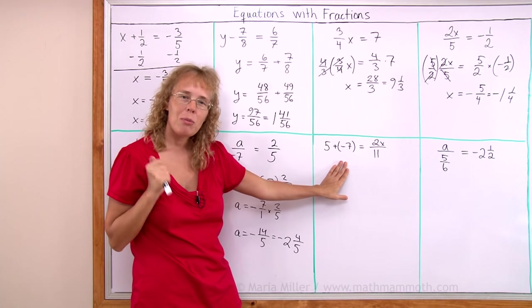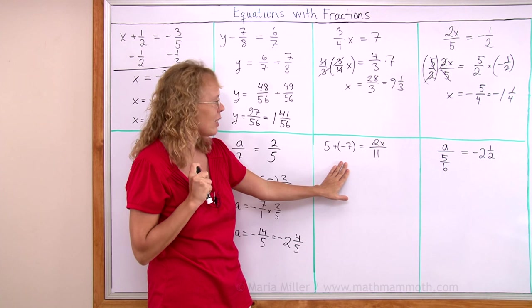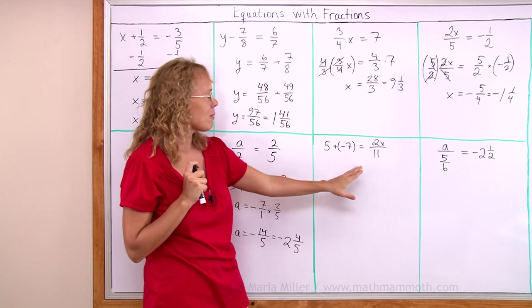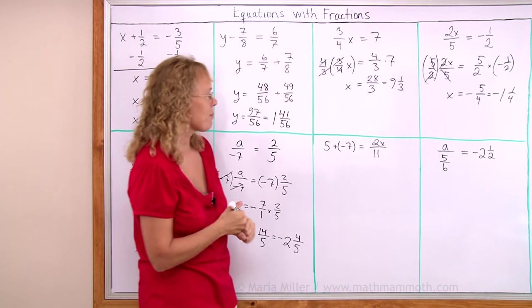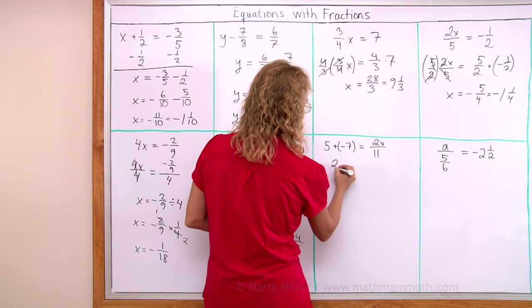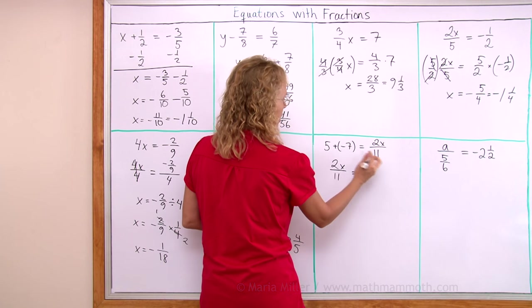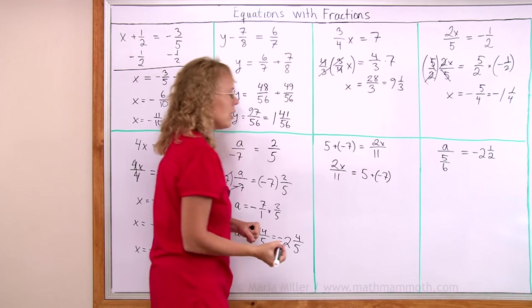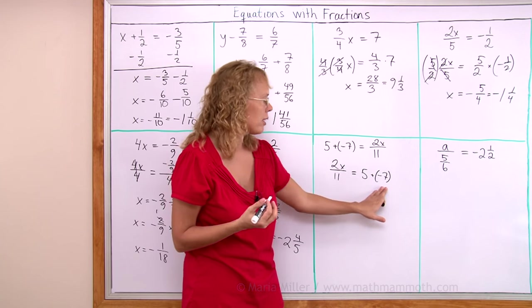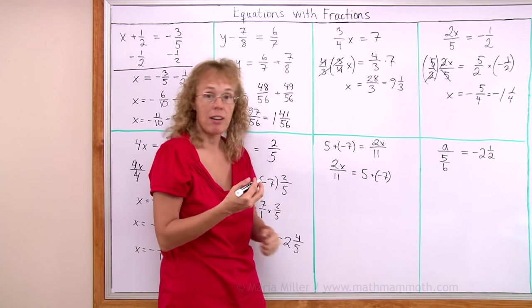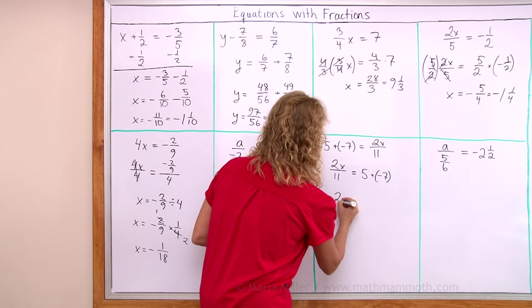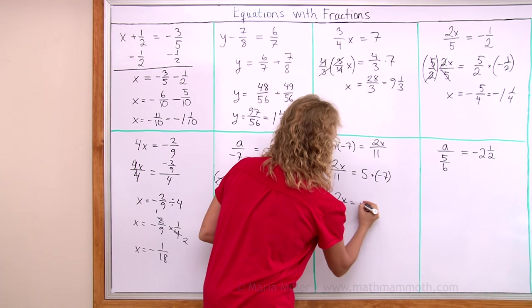This one here might look a little bit more complicated but it's not really. I can flip this side so that I get my x on the left side. I'll write it just 2x over 11 equals this here on the other side. The next thing I can do is simplify on the right side. I can calculate 5 plus negative 7, that's negative 2. So I get 2x over 11 equals negative 2.